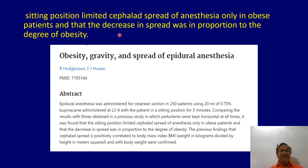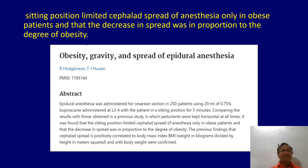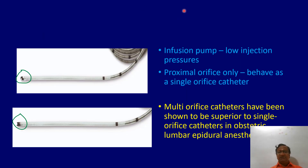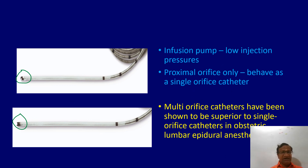In the sitting position, cephalad spread is mainly reduced in obese patients, and the decrease in spread is proportional to the degree of obesity. So there is not much difference between sitting and other positions in general. Regarding catheters: at low injection pressure, the proximal orifice behaves as a single orifice, but multi-orifice catheters are always better suited for improved quality and spread of the drug.